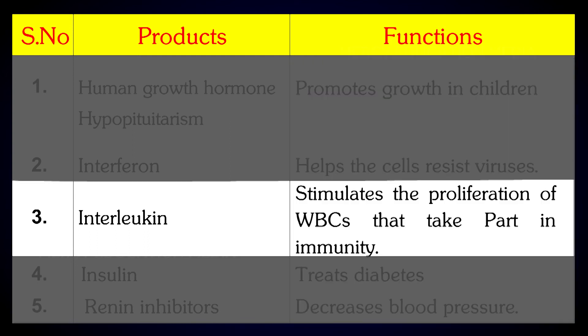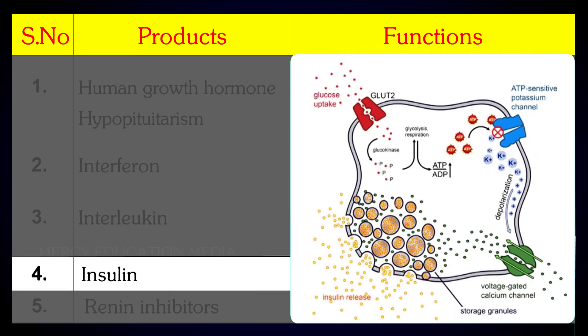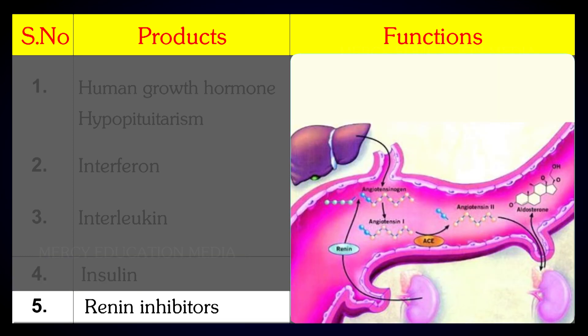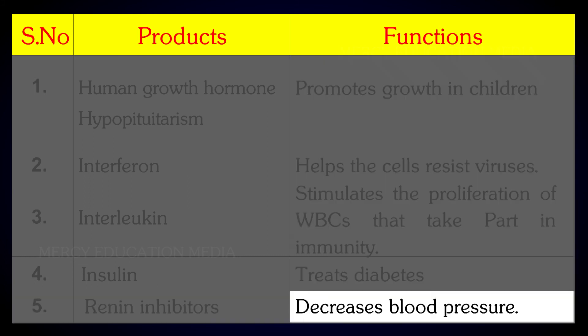Interleukin stimulates the proliferation of white blood corpuscles that take part in immunity. Insulin treats diabetes, and renin inhibitors decrease blood pressure.